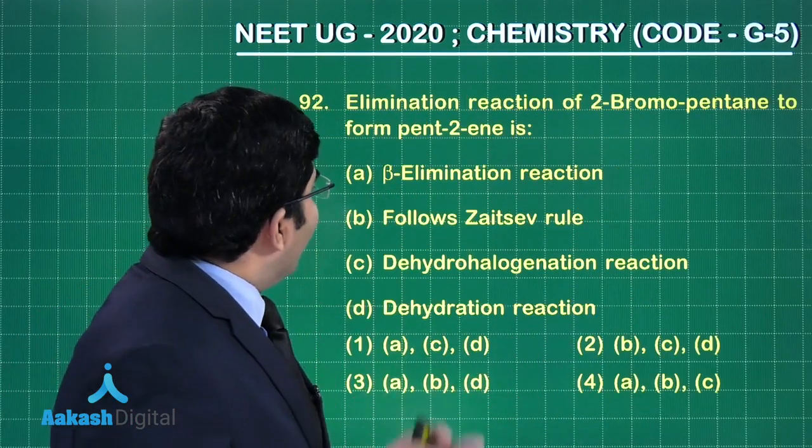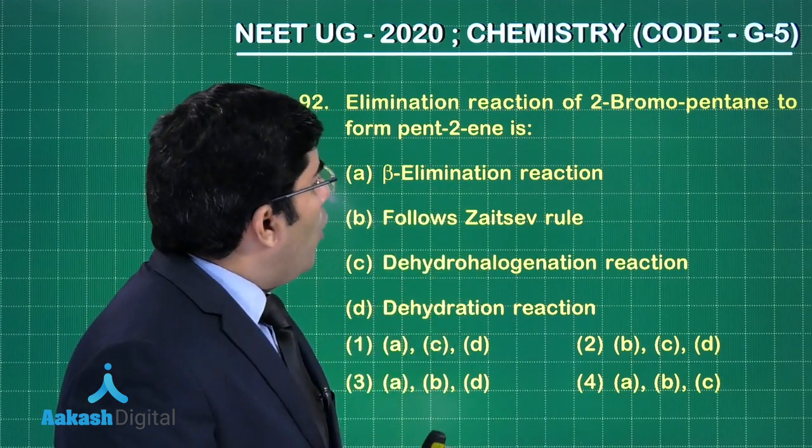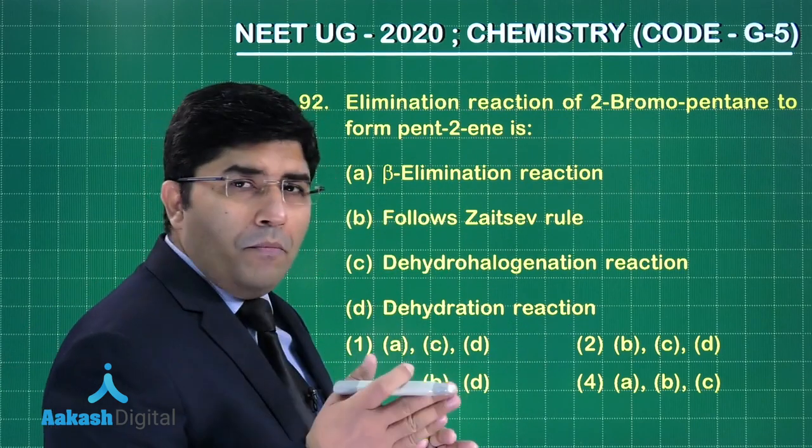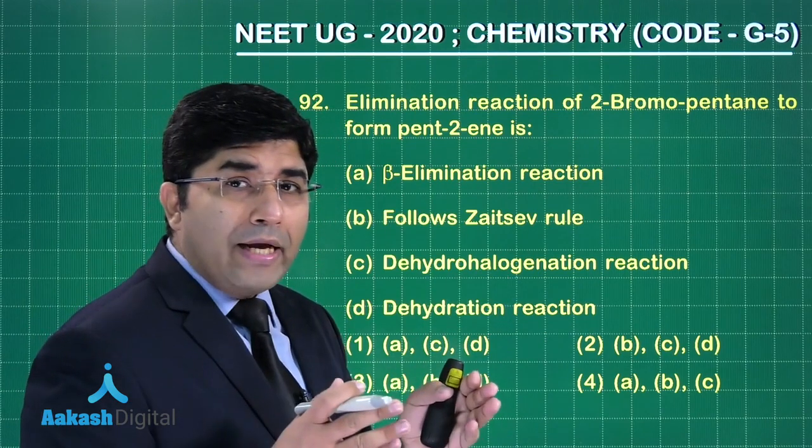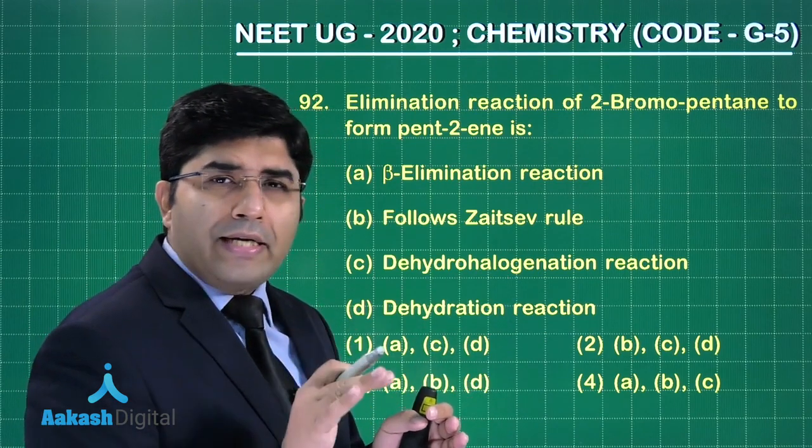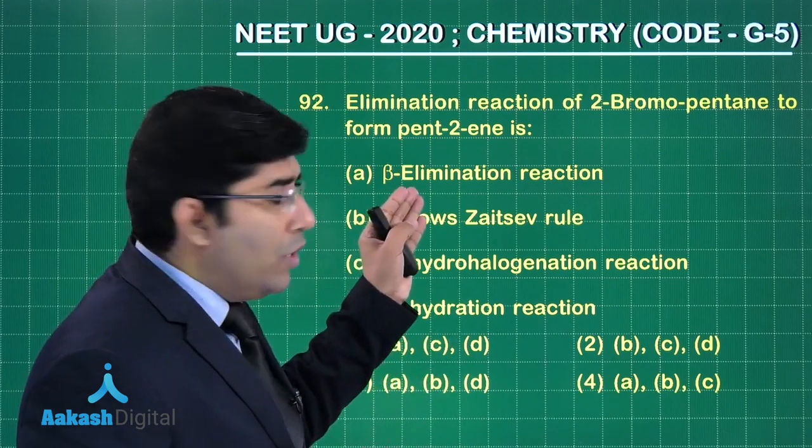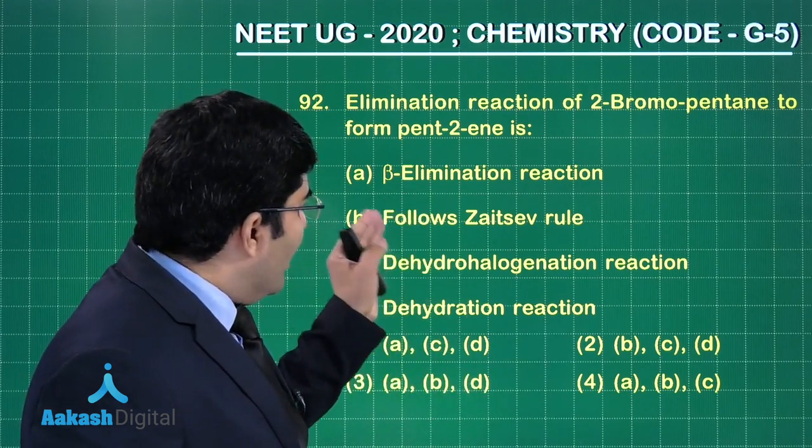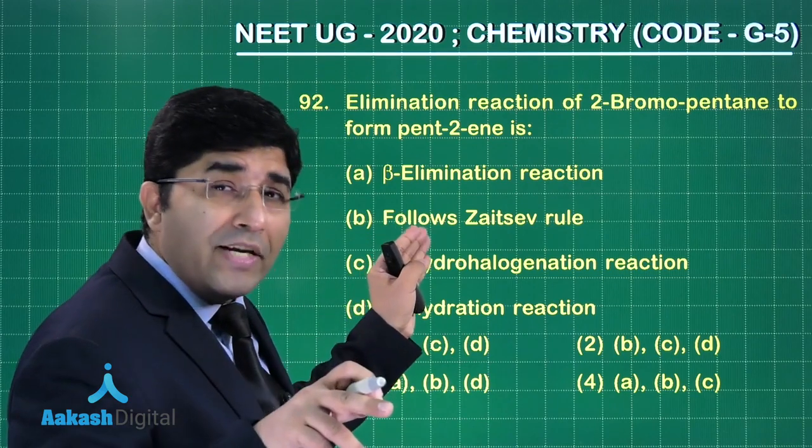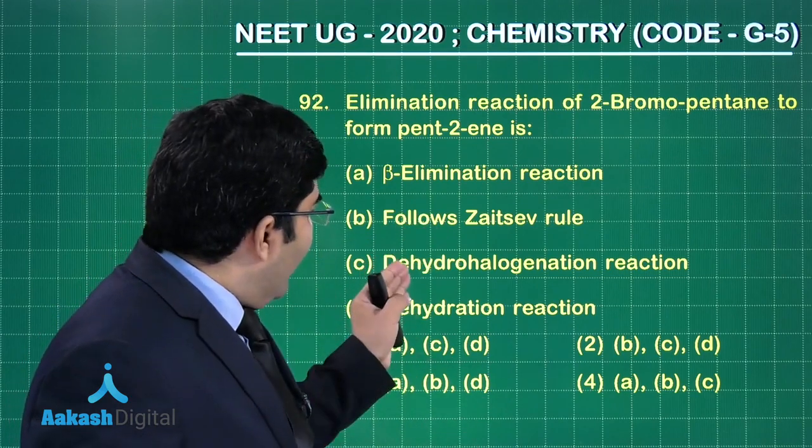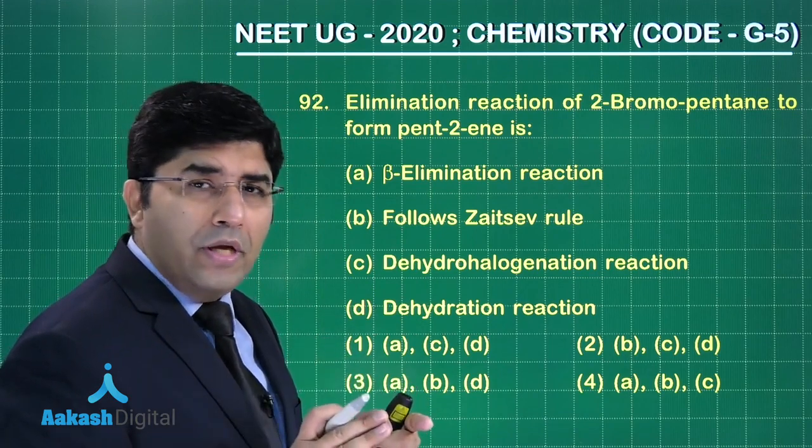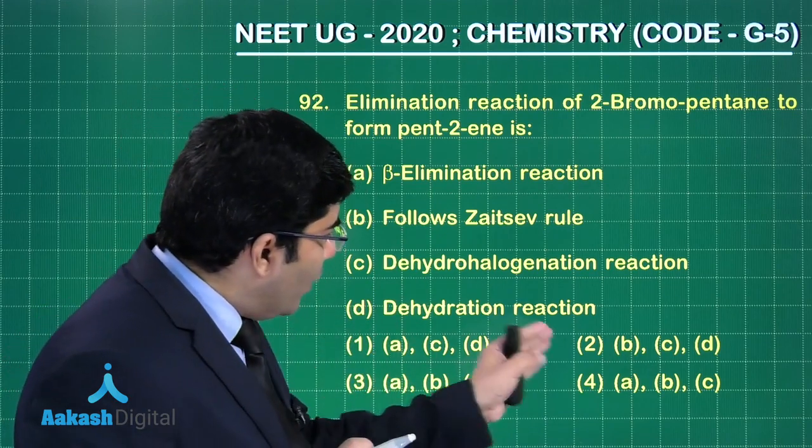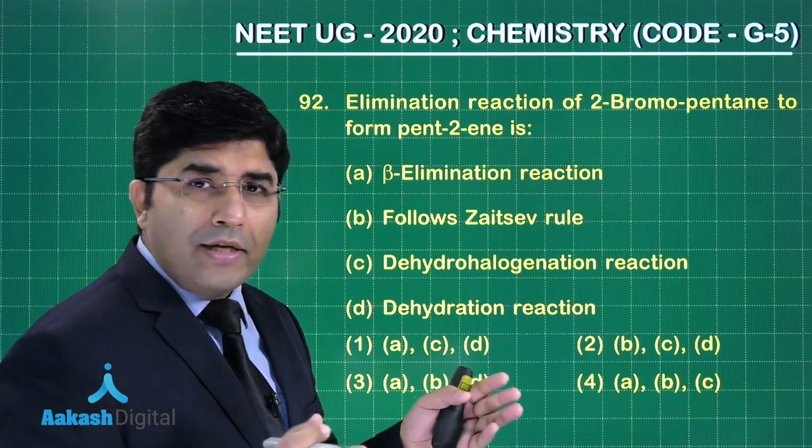Question 92 is asking: elimination of 2-bromopentane to form pent-2-ene is? We have to check which is correct - is it beta elimination reaction, or does it follow Zaitsev rule, is it dehydrohalogenation, or is it dehydration? Four options are given and we have to find the correct answer. Let's move on to the solution.